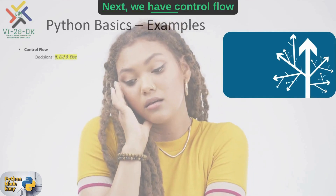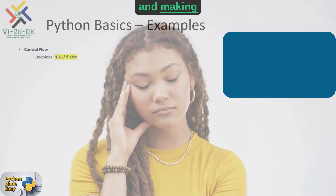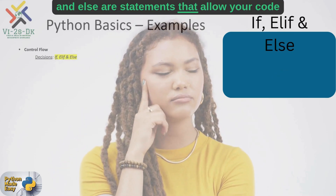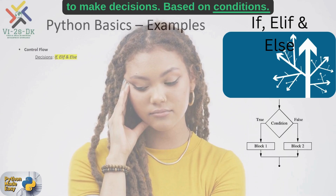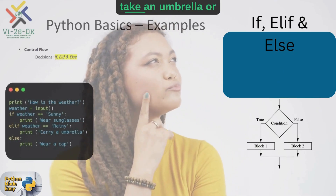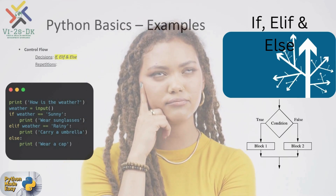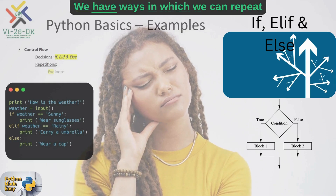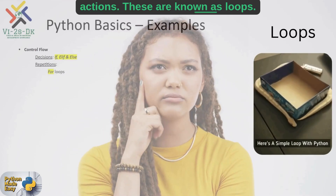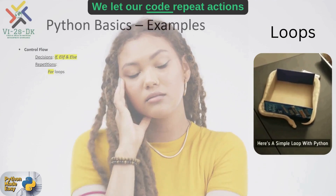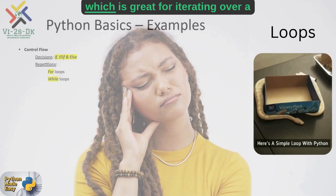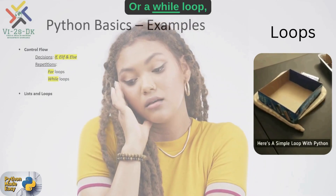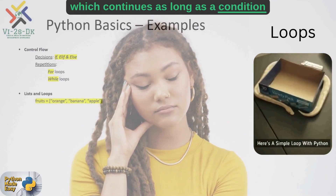Next, we have control flow and making decisions. If, elif, and else are statements that allow your code to make decisions based on conditions. For instance, if it's raining, take an umbrella — or else, wear a hat. Still talking about control flow, we have ways to repeat actions, known as loops. We let our code repeat actions using either a for loop, which is great for iterating over a collection like a list of names, or a while loop, which continues as long as a condition is true.